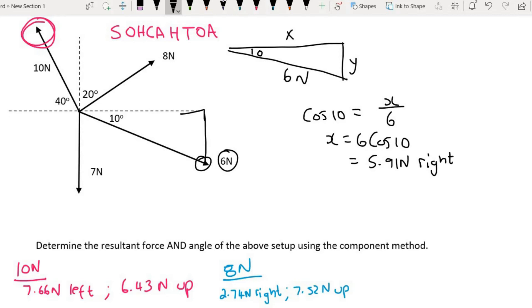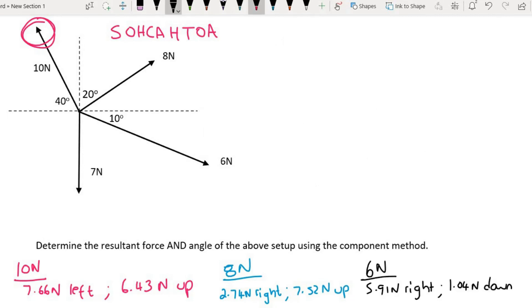For the vertical it would be to say that sin 10 is going to be equal to the opposite which is y over the hypotenuse which is 6. If you get the y alone it should be 6 sin 10, which would be 1.04 newtons. But now this arrow is actually going more downwards, so that'll be down.